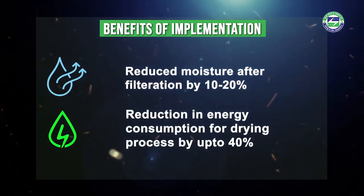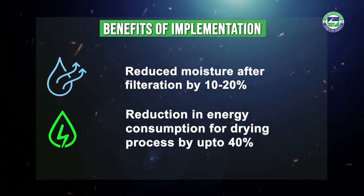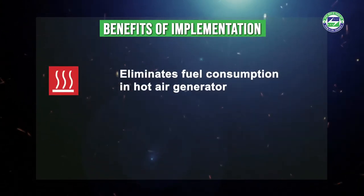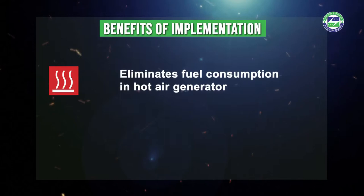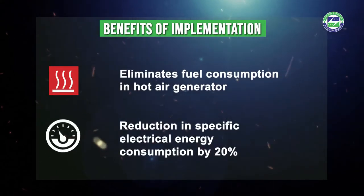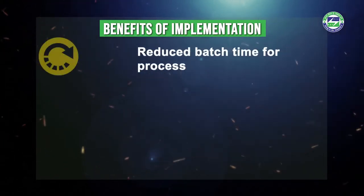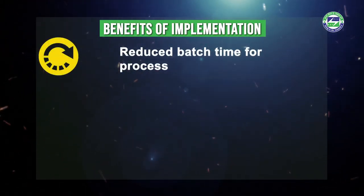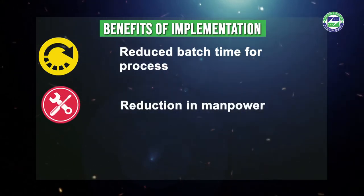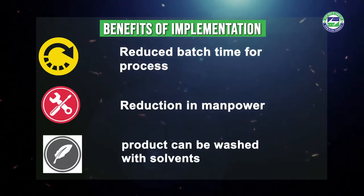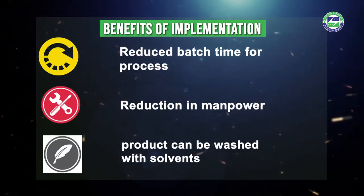The drying process requires at least 40 percent less energy than conventional drying systems. It eliminates fuel consumption in the hot air generator as nitrogen is used. Specific power consumption is reduced by 20 percent due to less machinery. Batch time reduces from 65 hours to 13 hours, with reduced manpower, no manual handling of product, and the product can be washed thoroughly and economically with solvents.